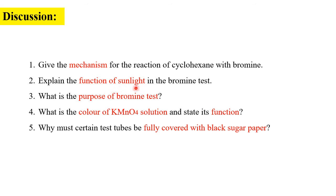You also need to know the function of sunlight — why in part A are there two conditions: under sunlight and in the dark? What is the purpose of the bromine test for part A? For part B, what is the original color of KMnO4 solution — the answer was already given — and state its function. Also explain why certain test tubes must be fully covered with black sugar paper.